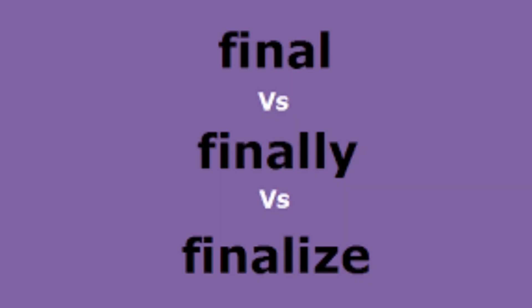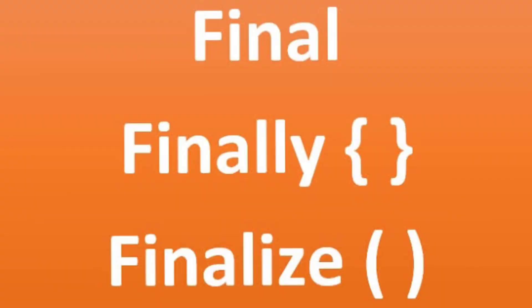What is the difference between final, finally, and finalize? So the first difference is: final is a keyword, finally is a block, and finalize is a method.